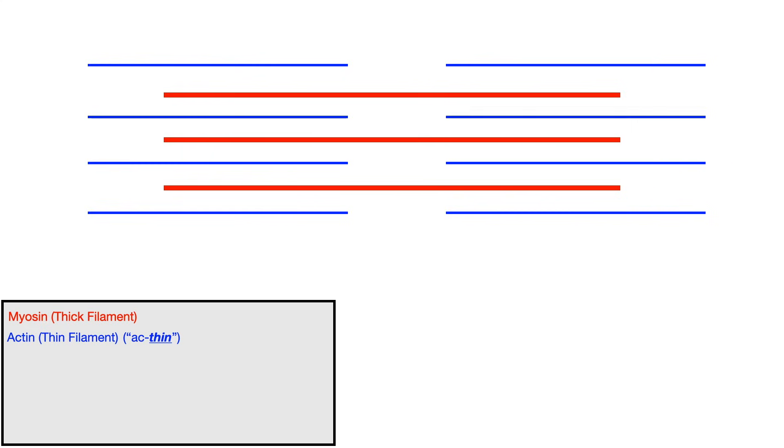Now the way to memorize this, to know which one's thin and which one's thick, is that instead of saying actin, say actin. So that way, you know that actin is thin, it's the thin filament. So it's the thinner, lighter one under the microscope. And then myosin is the thicker, darker one under the microscope. Sometimes I say myothic and actin. But I think you can just walk away from this saying actin, and that's good enough, because then by process of elimination, if it's actin, then you know that myosin is thick.